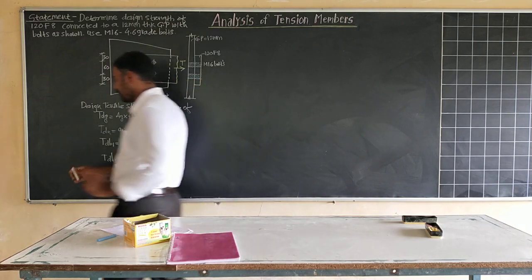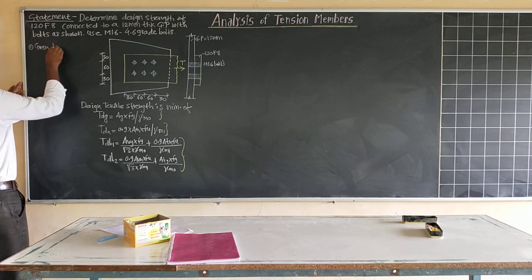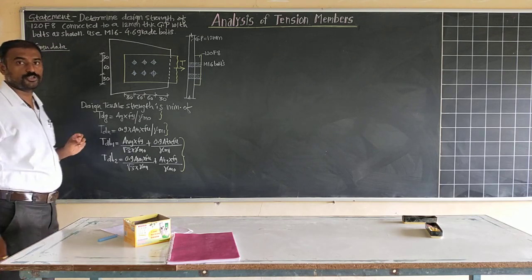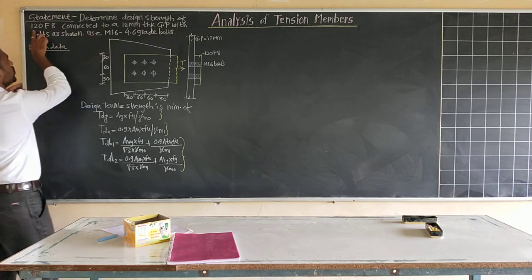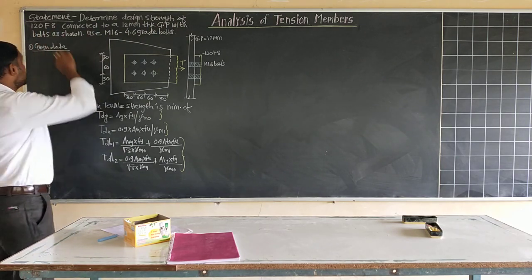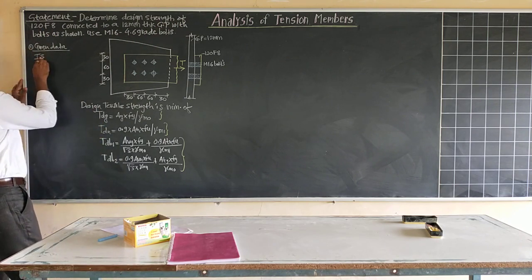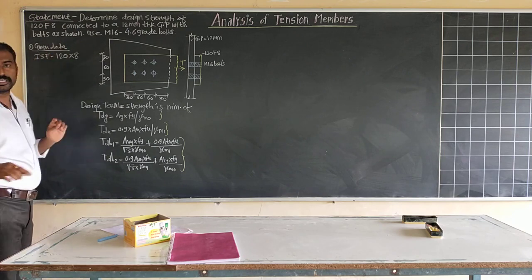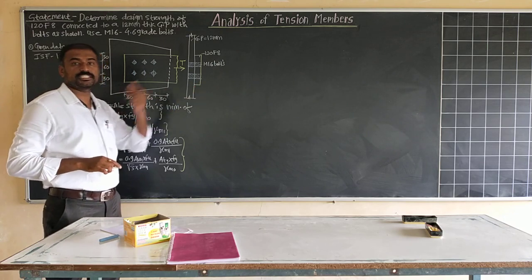We always start the solution by writing the given data. From the problem statement, we identify: Indian standard flat 120 by 8, where 120 mm is the width and 8 mm is the thickness.